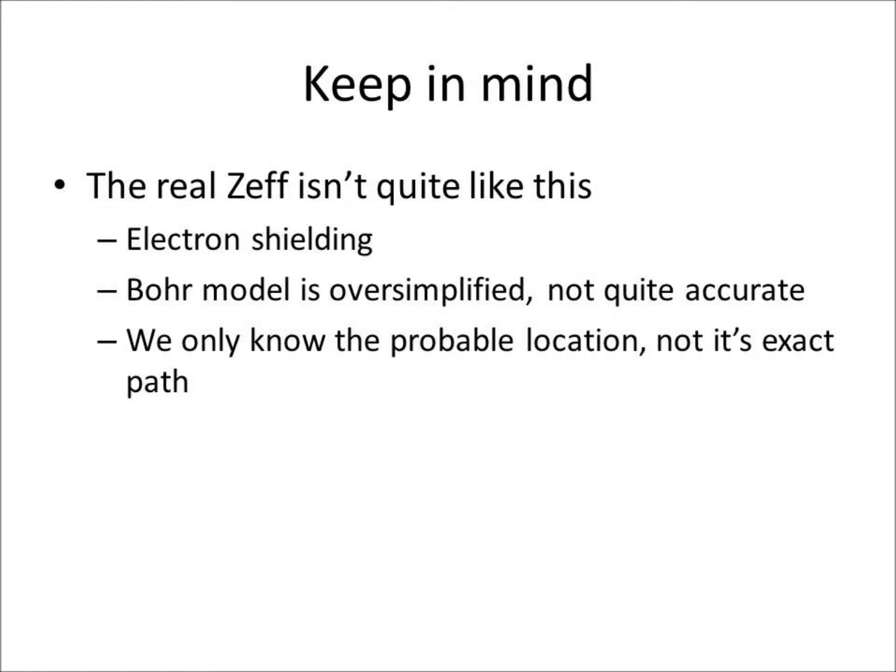However, finding the actual Z-effective isn't quite so simple as using this hypothetical or theoretical example. There are multiple reasons for this. Firstly, the actual Z-effective wouldn't be the same because electrons in the same outer valence shell would repel each other because like charges repel.